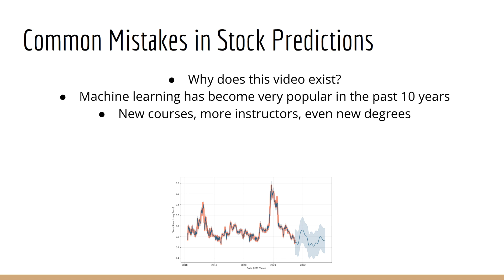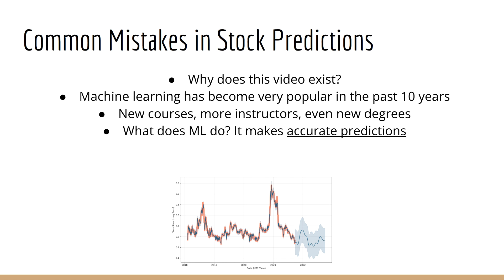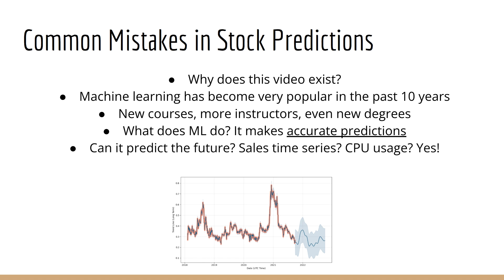What we quickly learn when we start to dive into machine learning is that it can be used to predict things — all kinds of things. It can predict what object is inside a photo, whether or not a customer has made a fraudulent transaction, and even your state of mind using only readings of your brain waves. So a natural question to ask is: can it predict the future?